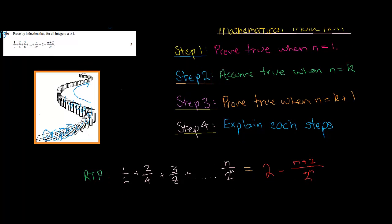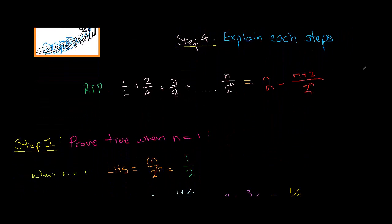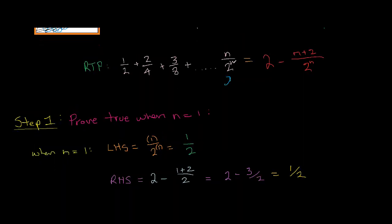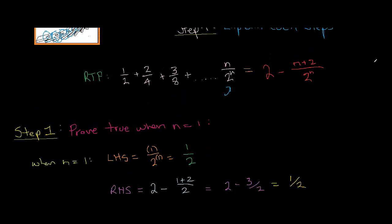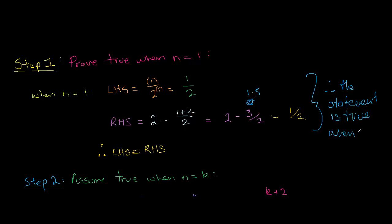Step 1: we're going to prove it's true when n equals 1. The left-hand side, when we just put 1 in, we get 1 over 2 to the power of 1, so we get a half. The right-hand side: putting in n equals 1, we get 2 minus (1+2) all over 2 to the power of 1, which is 2 minus 3 on 2. That's 2 minus 1.5, which is a half. So the left-hand side equals the right-hand side. Therefore the statement is true when n equals 1.